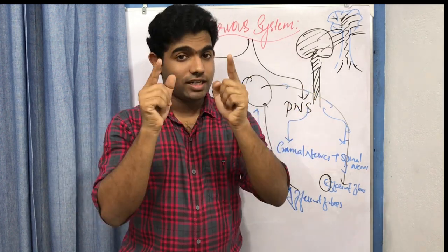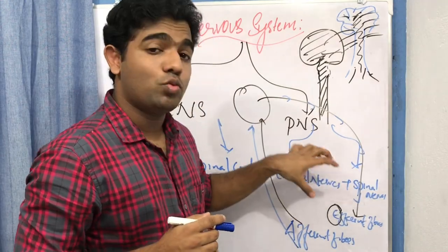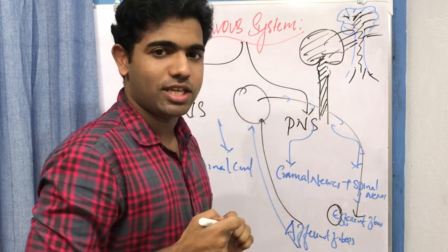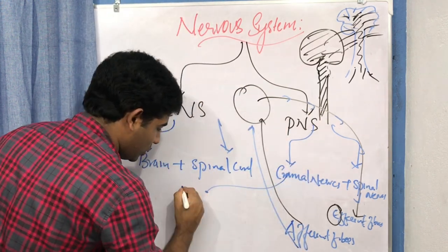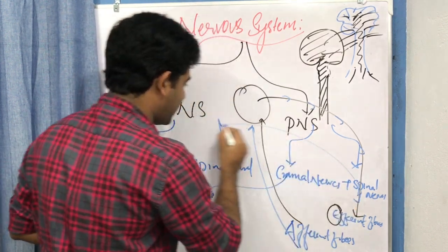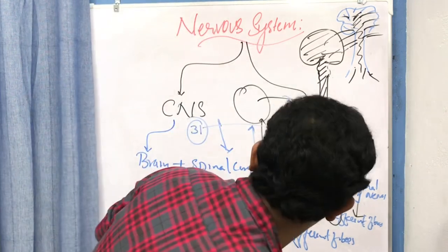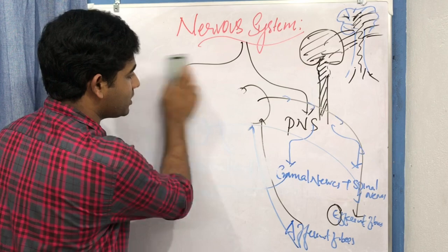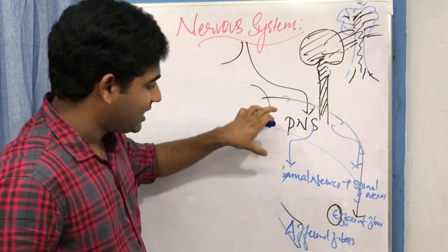Let us add more foundational knowledge. There are 12 pairs of cranial nerves and 31 pairs of spinal nerves. We also established that there are afferent fibers and efferent fibers.